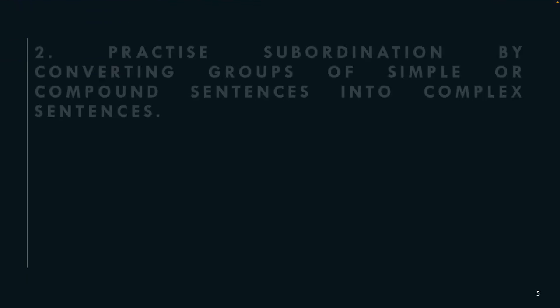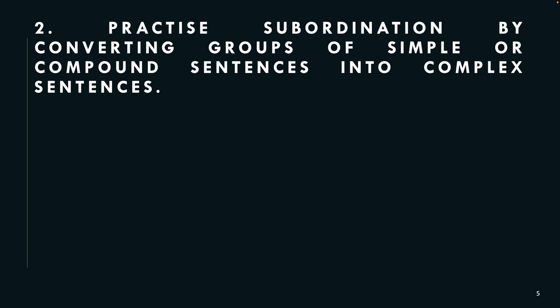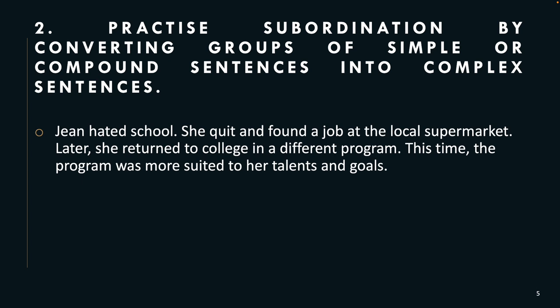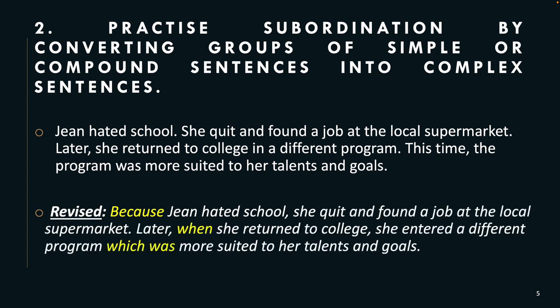Let's take a look at the second suggestion: practice subordination by converting groups of simple or compound sentences into complex sentences. Original: 'Jean hated school. She quit and found a job at a local supermarket. Later, she returned to college in a different program. This time, the program was more suited to her talents and goals.' Revised: 'Because Jean hated school, she quit and found a job at a local supermarket. Later, when she returned to college, she entered a different program, which was more suited to her talents and goals.' You can see how 'when' and 'which' introduce dependent clauses.